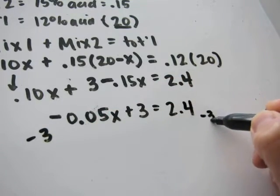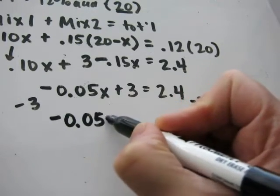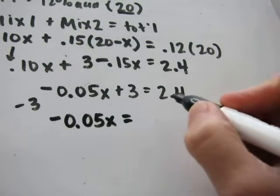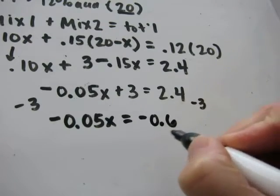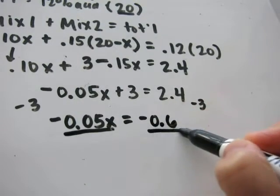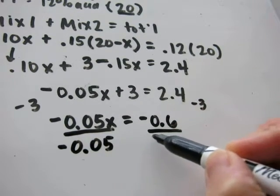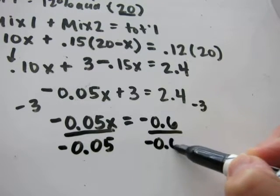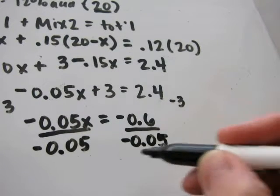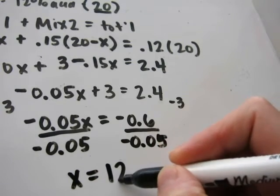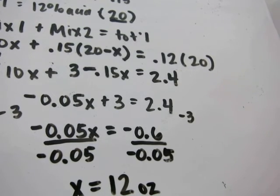Subtract 3 from each side. So by subtracting 3, this leaves you with negative .05 x. 2.4 minus 3 is negative .6. To solve for x, let's divide each side by negative .05. Negative .6 divided by negative .05 is 12, and that's ounces of mixture 1, which is our 10% solution.